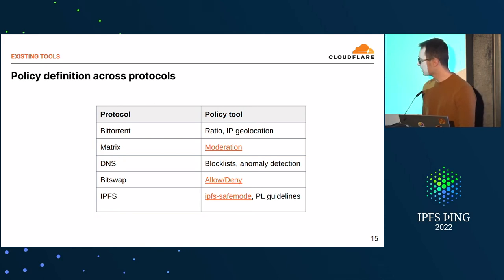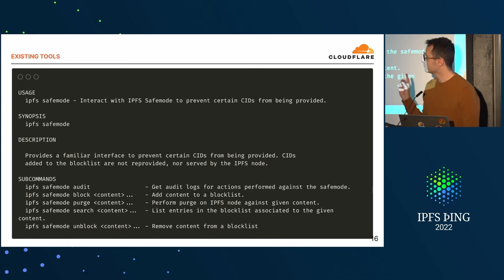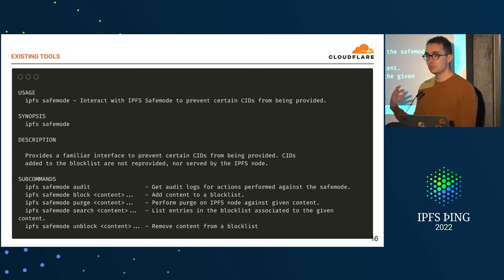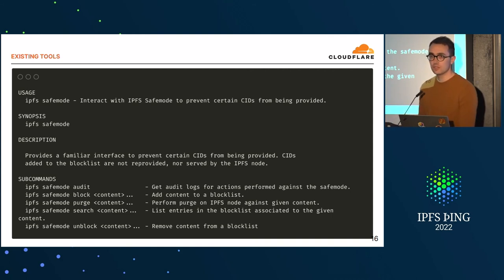I'll briefly discuss IPFS Safe Mode, which we released at Cloudflare, and also Vayner's guidelines put online by Protocol Labs — for instance, how an Nginx cache should interact with policy, and what you should do to handle various takedown requests. IPFS Safe Mode is an extension to IPFS which allows you to block certain content from a blocklist perspective, easily purge your cache, search through the various blocks you've made, and also have an audit log for gateway operators to know what content was blocked, at what time, and for what reason — so you can review it later. It was made as a fork of IPFS so it can easily be tried.